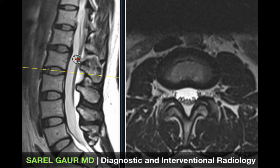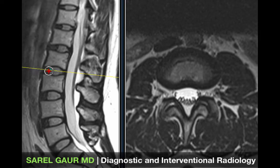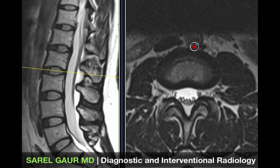Let's look at all this anatomy on the axial view to correlate it in a different plane. Cutting right through a disc, I can see it is round with low signal peripherally due to fibrous tissue, and centrally it has high signal due to higher water content — the nucleus pulposus.